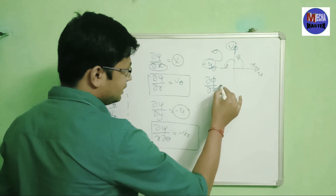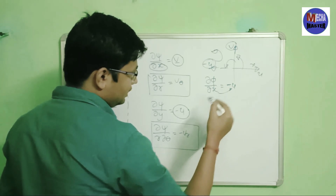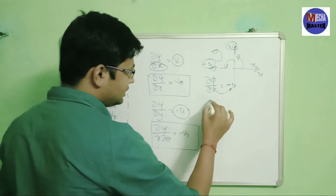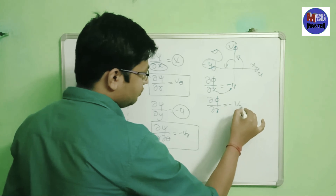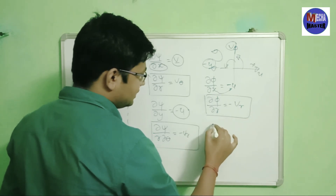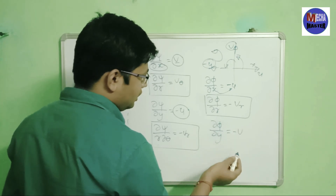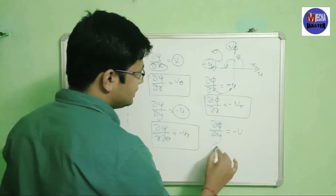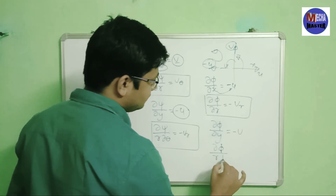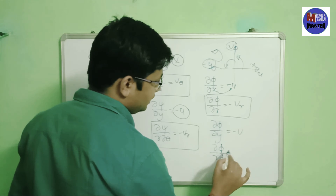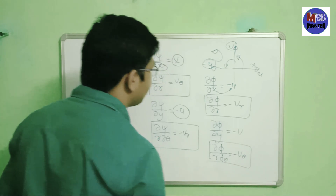Similarly, you can change the velocity potential function. Del φ upon del x equals to minus u — it gives flow in the same direction but with a negative sign. Converting: del φ upon dr equals to minus vr. Another equation, del φ upon del y equals to minus v, converts to: del φ upon r dθ equals to minus vθ. It's very simple.